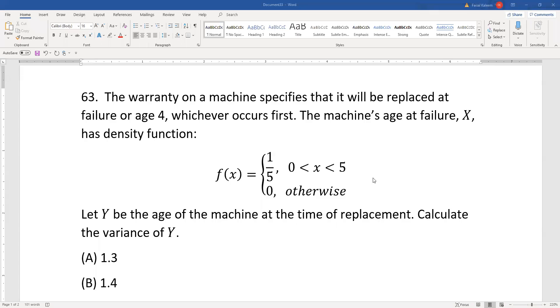The warranty on a machine specifies that it will be replaced at failure or age 4, whichever occurs first. The machine's age at failure x has this density function.